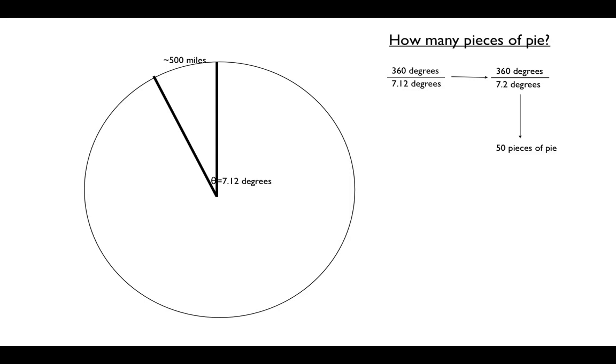So there's about 50 pieces of pie that are fitting around, and then each piece has a crust length of about 500 miles. So obviously I didn't draw this to scale, but what we have is these different pieces of pie wrapping around the earth, each with a crust length of 500 miles. There's about 50 of them, so we do 500 times 50, and that gives us a circumference of 25,000 miles.